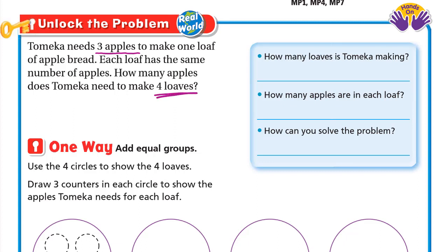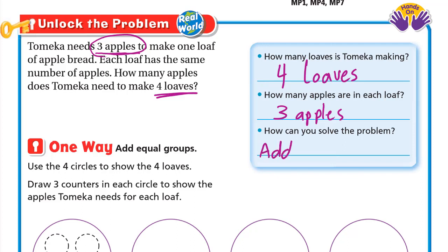So let's look at these questions. How many loaves is Tomeka making? She needs four loaves. How many apples are in each loaf? We need three apples for one loaf, so there are three apples for each loaf. How can we solve the problem? Each loaf needs three apples and we need four loaves, so we'll add three apples four times, or we can skip count by three four times.